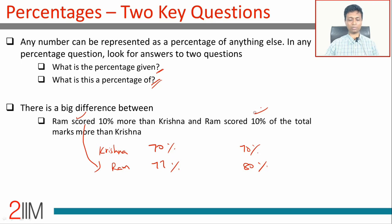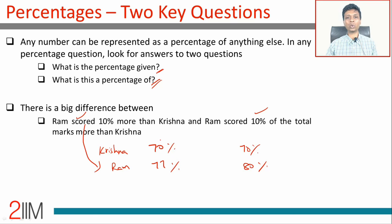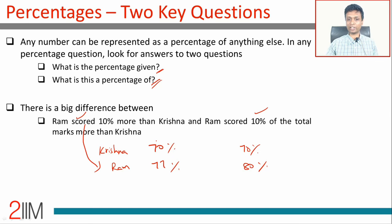So there's a big difference between the two statements. '10% more than Krishna' means 1.1 times what Krishna scored. '10% of the total marks more than Krishna' means 10% of the total needs to be added to whatever Krishna scored. That distinction is vital. If you know to look for it, you'll find it — just don't switch off on this topic. Continuously look for what is this a percentage of, and keep an eye open for that.